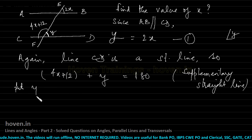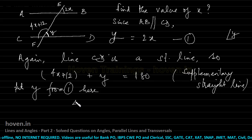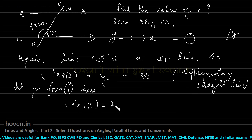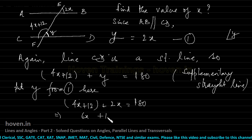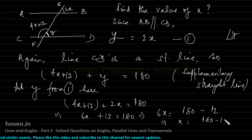Put y from equation 1 here and we get 4x plus 12 plus 2x equal to 180, which implies 6x is equal to 180 minus 12, which implies x is equal to 180 minus 12 by 6, and therefore this will go for 30, this will go for 2, which gives me 28 degrees as the answer.